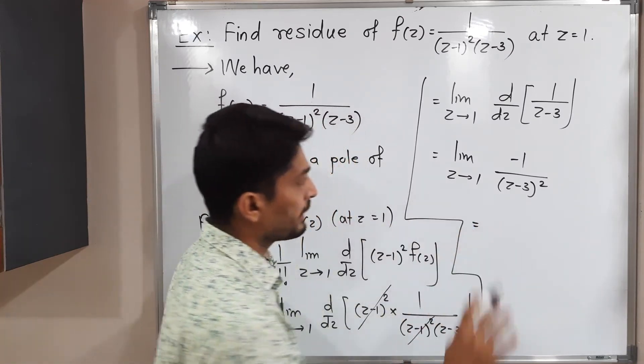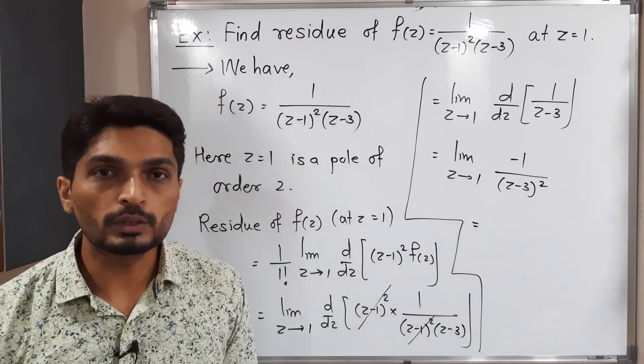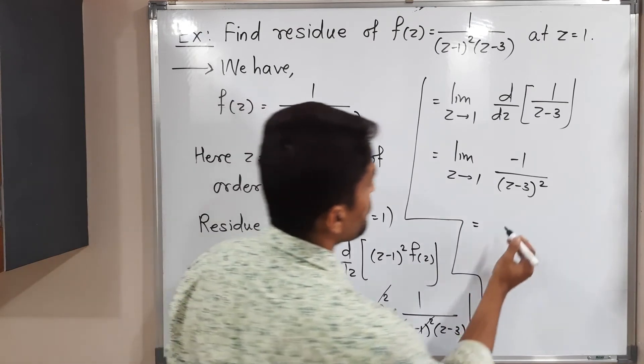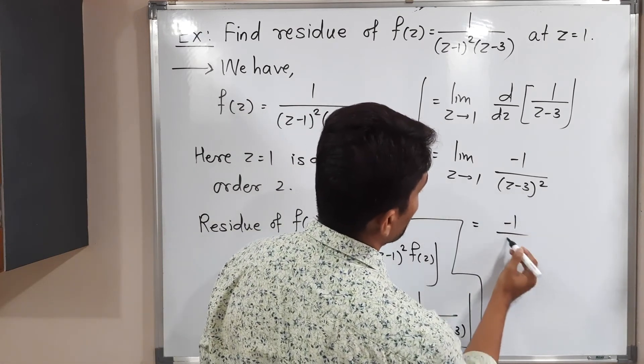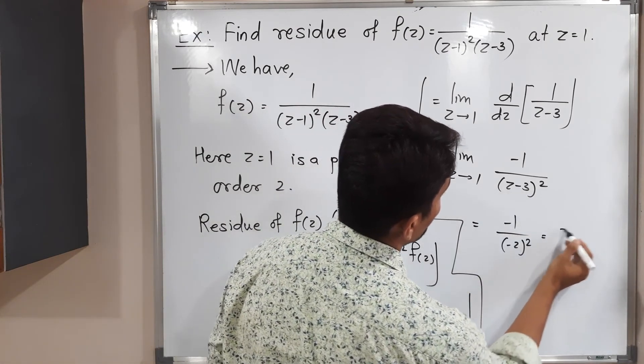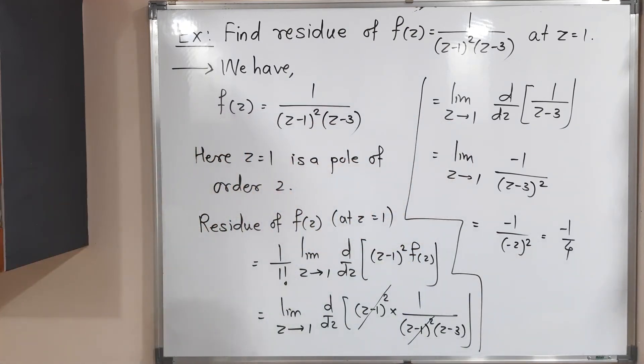This is equal to - now I am applying the limit. That means simply I will put z equals 1 there. Minus 1 upon (1 minus 3) - minus 2 squared. Minus 1 by 4. This is the required residue.